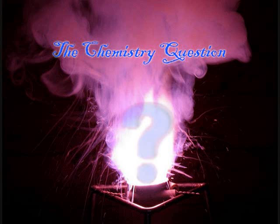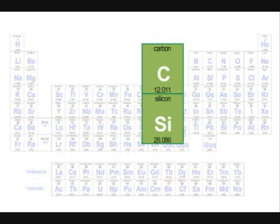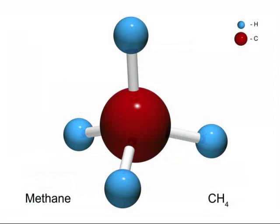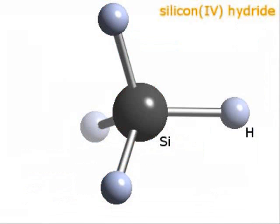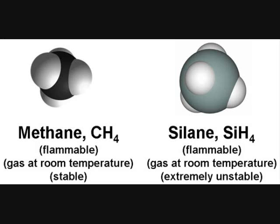Welcome to the chemistry question. Jordan here. Carbon and silicon have similar properties. In a basic carbon compound, methane has a silicon analog, silane. They both have four hydrogen atoms arranged in a tetrahedral geometry around the central atom.